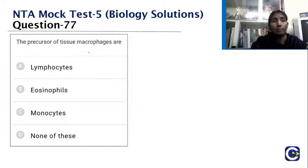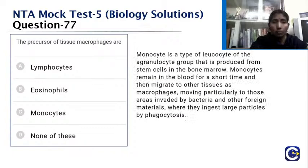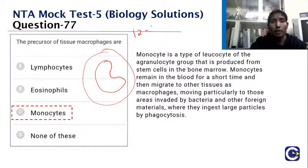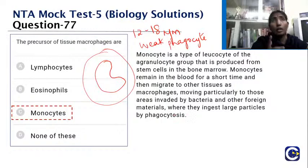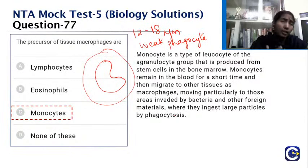The precursor of tissue macrophages is monocytes. Monocytes are the largest WBCs (~12–18 µm diameter), agranulocytes produced from stem cells in bone marrow. They remain in blood briefly as weak phagocytes, then migrate into tissues and differentiate into macrophages that perform phagocytosis at sites invaded by bacteria or foreign material. Fixed macrophages include Kupffer cells in the liver, osteoclasts in bone, and dendritic cells in the skin.